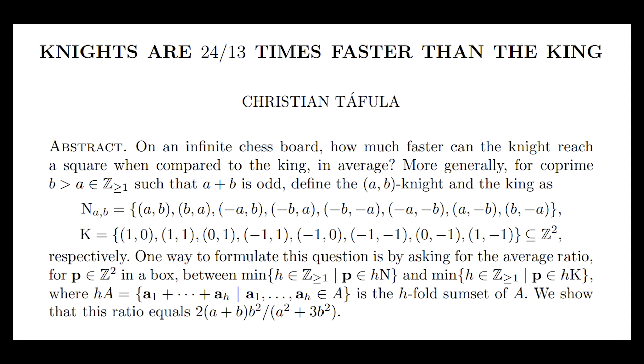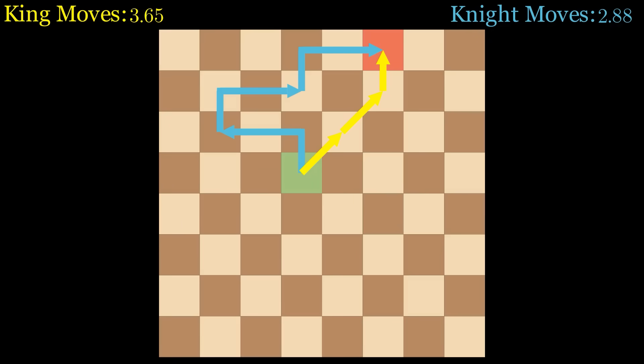Now in this paper by Tafoula, it explicitly calculates how fast these super knights move around on an infinite chessboard. Here's the formula for a velocity of an AB super knight, and the result depends on the A and B, is given by 2 times (A plus B) times B squared divided by (A squared plus 3B squared). If I plug in A equal to 1 and B equal to 2 to get the regular knight, then you get the result that the knight is 24 thirteenths times faster than the king. Quite a bit better than the approximately 1.3 that we computed for the 8x8 board, where the constraints from the small board was really slowing the knights down.